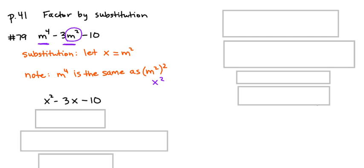So that means that our expression is now x squared, m to the fourth is now x squared, minus three x squared, excuse me minus three x, minus three m squared is now minus three x and we still have minus ten.